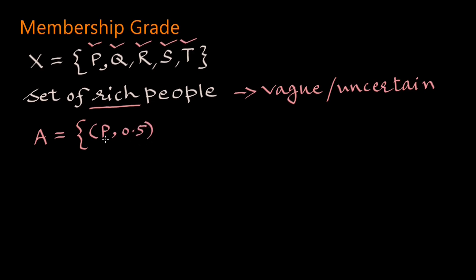So we write fuzzy set A as a set of ordered pairs of person and its membership grade. Person P has membership grade 0.5, Q has membership grade 0.9, R 0.4, S 0.6, and T 0.2.